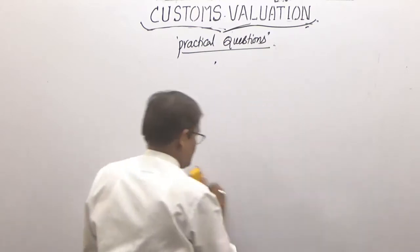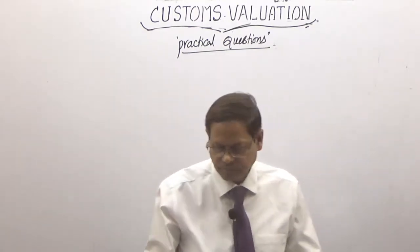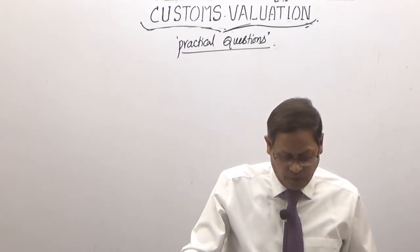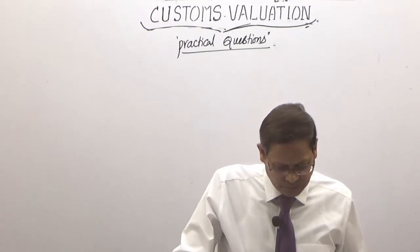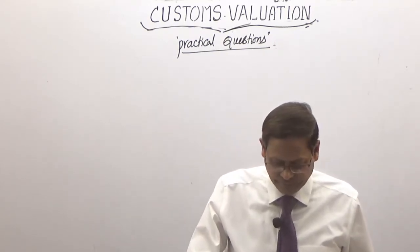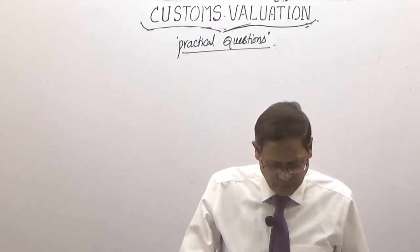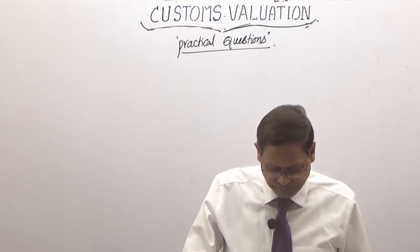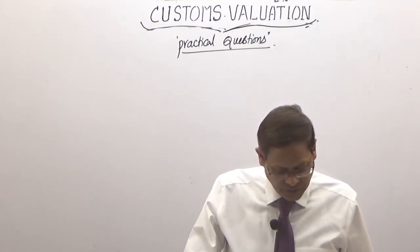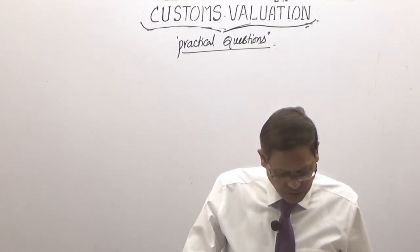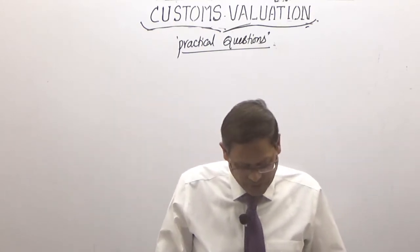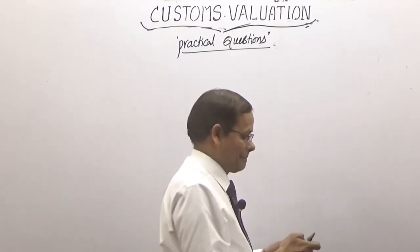Let us have another question: computation of assessable value and duty. The customs officer computed the FOB value at $20,000, including development charges. So FOB including development charges is $20,000.